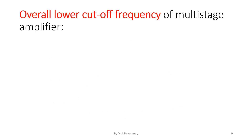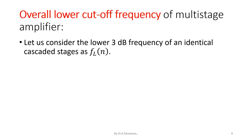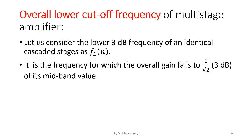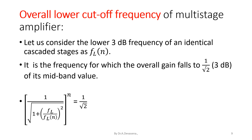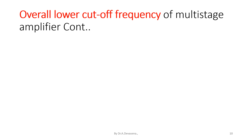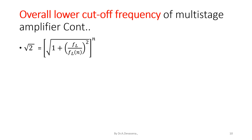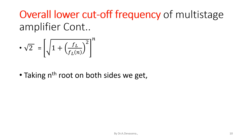Let us see the overall lower cutoff frequency of the multi-stage amplifier. Let us consider the lower 3 dB frequency of N identical cascaded stages as FL(N). It is the frequency for which the overall gain falls to 1 by root 2, that is 3 dB, of its midband value. The equation is: 1 divided by square root of (1 plus (FL by F1) squared) to the power N, is equal to 1 by root 2.